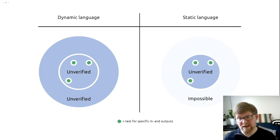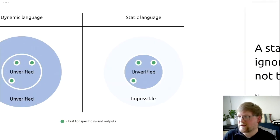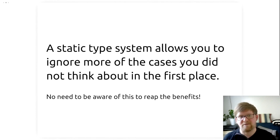So, if we compare the dynamic language to the static language, then the only thing that really changes is that a large space of the possible inputs that were unverified in the dynamic language are impossible in the static language. So they are not part of the problem that we have to deal with. What this basically brings to the table is that what a static type system does for you is it allows you to ignore more of the cases that you did not think about in the first place.